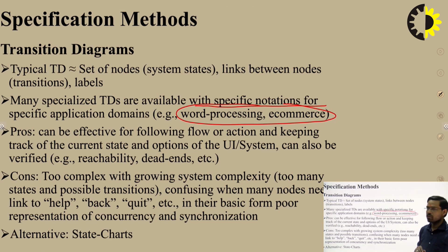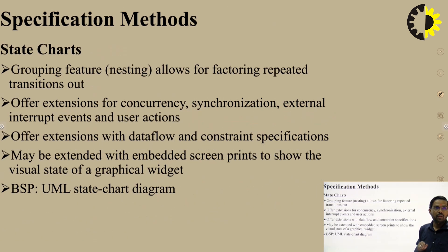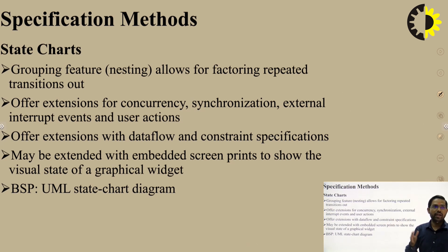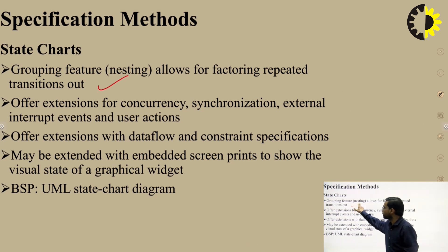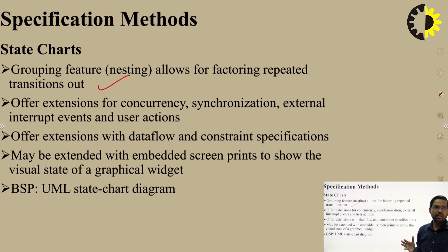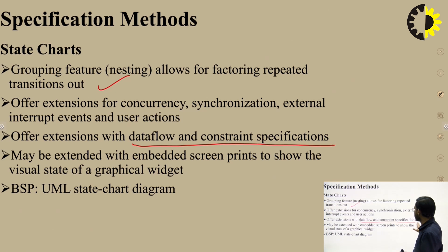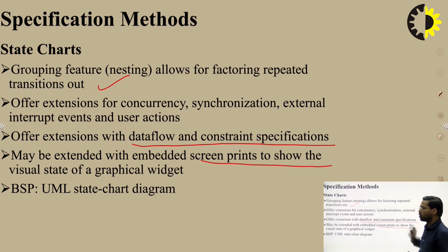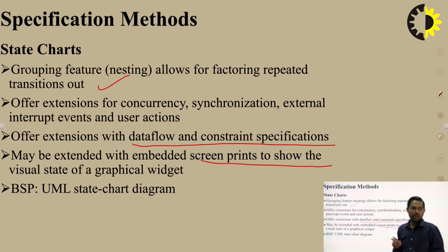An alternative is state chart diagrams. State charts provide a grouping feature for nesting and allow factoring and representing transitions. They offer extensions for concurrency, synchronization, external interrupt events, and user actions, as well as data flow and constraint specification. They may also be extended with embedded screen paints to show the visual state of graphical results, using Unified Modeling Language (UML) state chart diagrams.